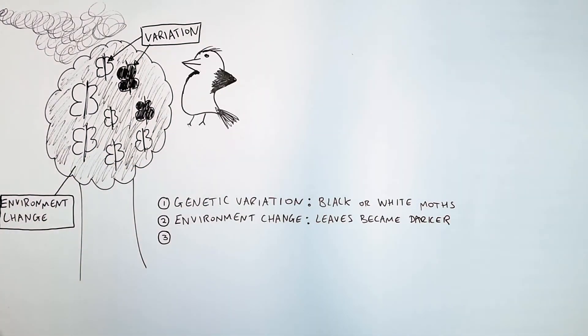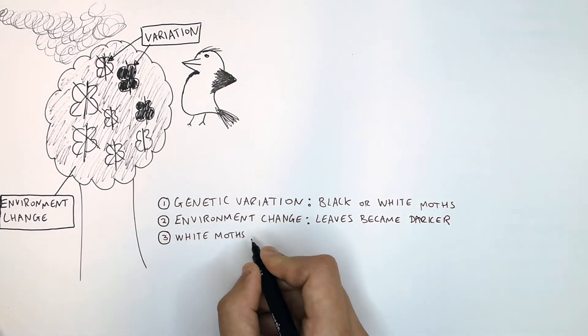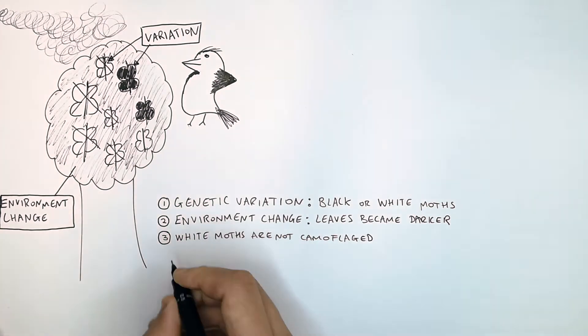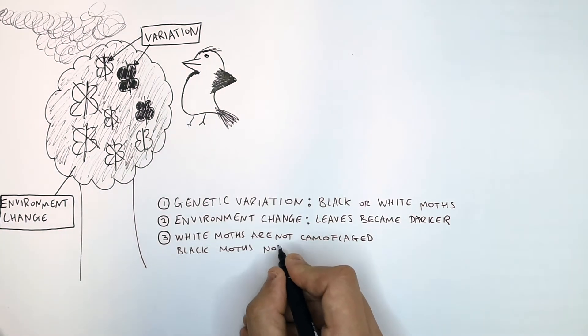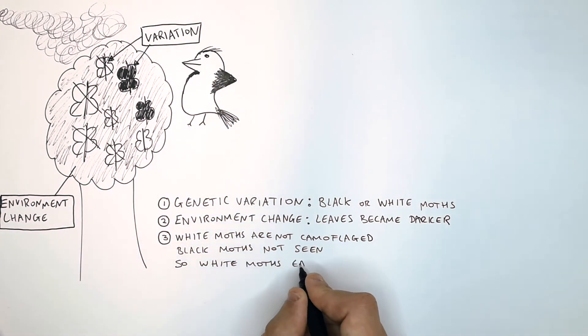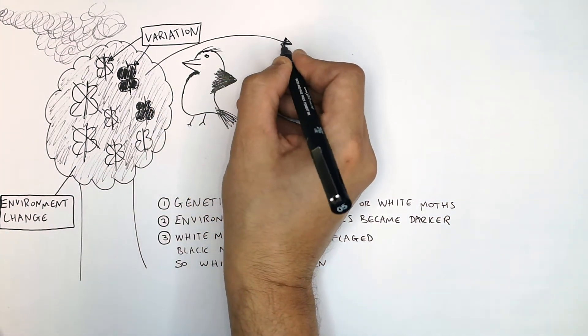Now you must explain why the genetic variation is beneficial to the environment change. So in this case, the white peppered moths can no longer camouflage against darker coloured trees because of the soot, so they will be eaten by the birds. The white moths can no longer camouflage against the trees whereas the black moths are not seen. So therefore, the white moths are going to be eaten but the black moths are going to survive.